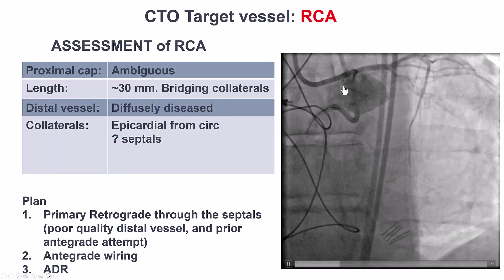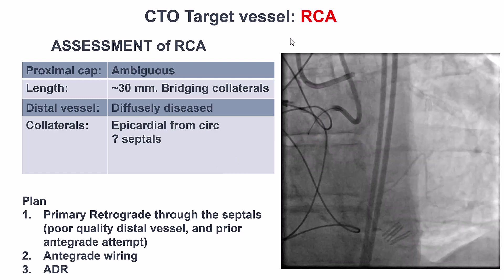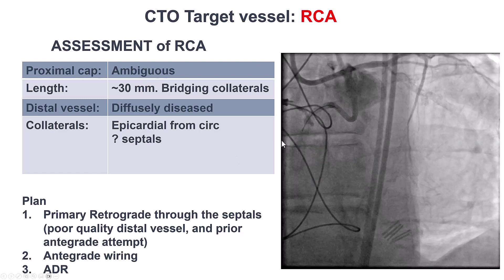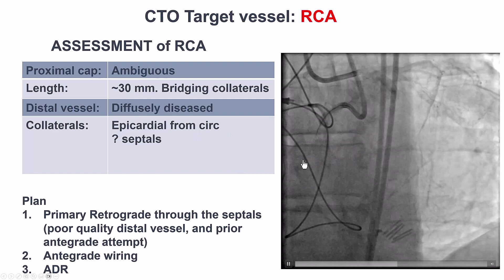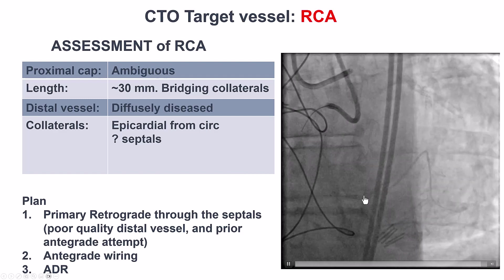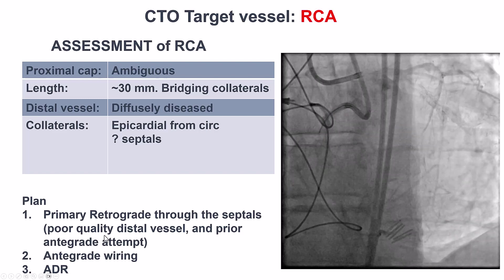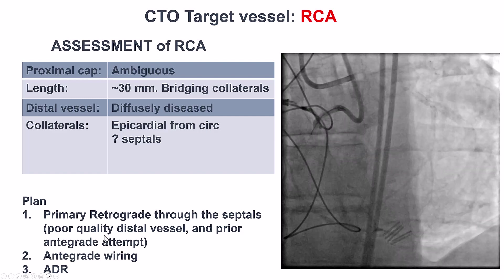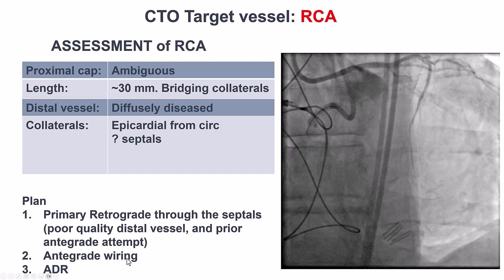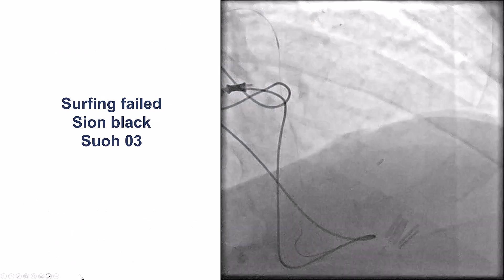Our initial plan was to attempt to recanalize the right coronary artery CTO, as that seemed to be a slightly larger territory. It was an ambiguous proximal cap, length of 30 mm, diseased distal vessel, and epicardial collaterals. Given the ambiguity, we decided to first start with a primary retrograde approach, followed by antegrade wiring if we could clarify the ambiguity, followed by antegrade dissection re-entry.